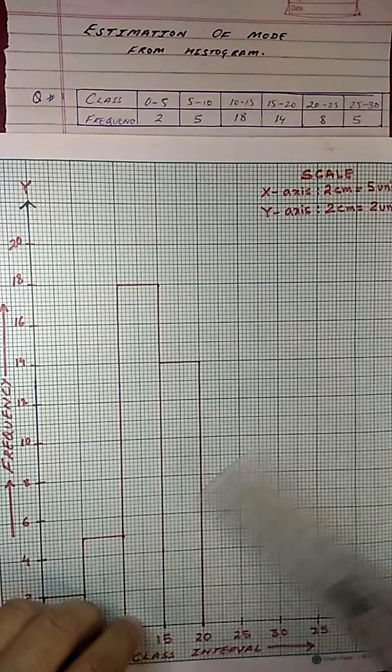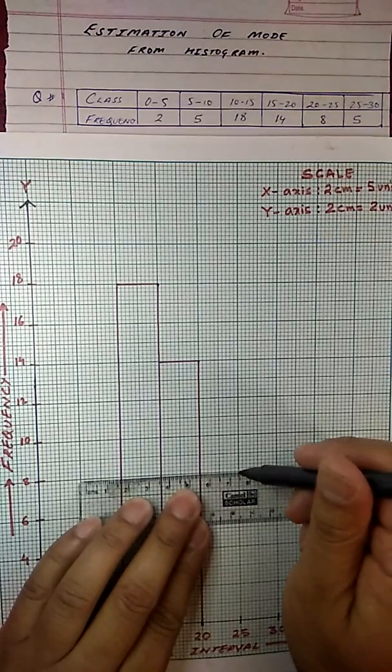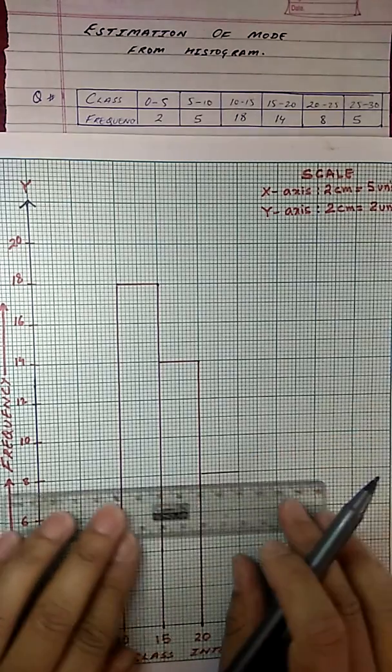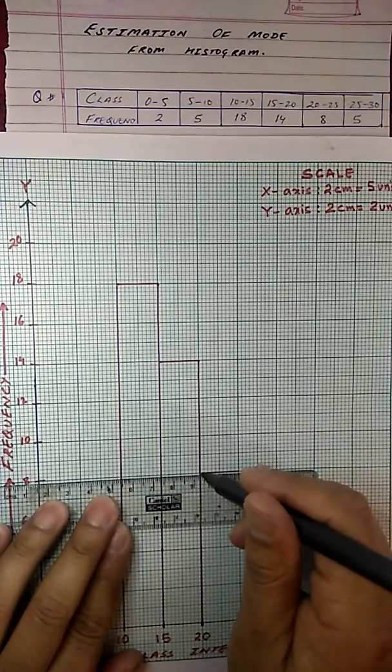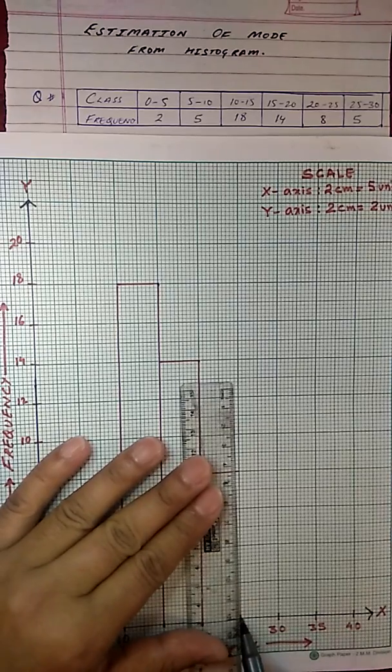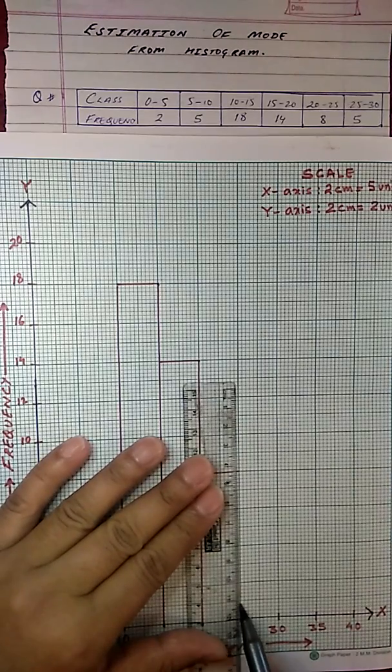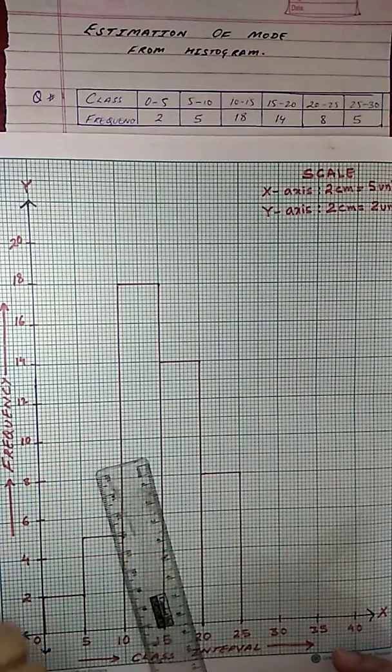20 to 25 is 8. My 8 is here. Remember, I am drawing it keeping in mind what is my scale. So my 8 is here. Therefore, I am drawing a horizontal line at 8 here and vertical line at 25 because it belongs to the class 20 to 25.